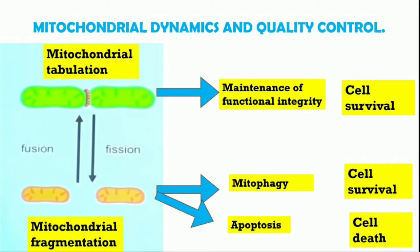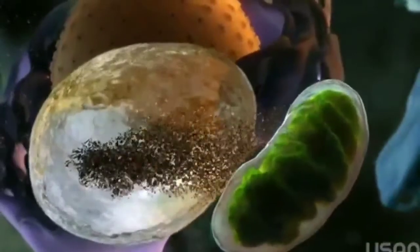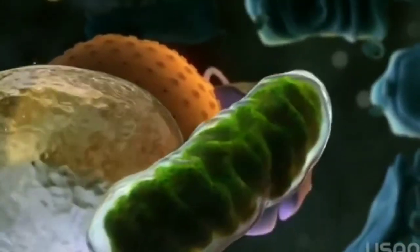Mitochondria are highly dynamic organelles — they constantly fuse and divide, determining the topology of mitochondria in a cell. These fusion and fission events are very important to preserve mitochondrial activity. Fusion usually results in tubulation of mitochondria and is considered a pro-survival mechanism; it promotes mitochondrial activities and preserves mitochondrial integrity, whereas fission is associated with mitochondrial quality control.